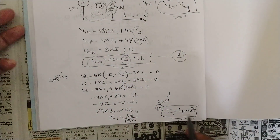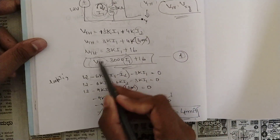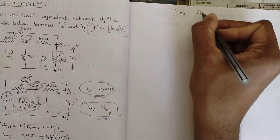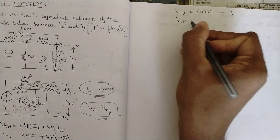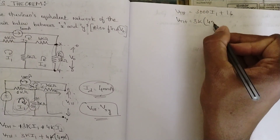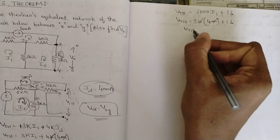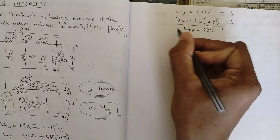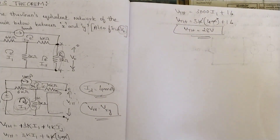We got i1 = 4 milliamps. Now substitute into the Vth equation: Vth = 3k × 4mA + 16 = 12 + 16 = 28 volts. So the Thevenin voltage is 28V — one job is done.